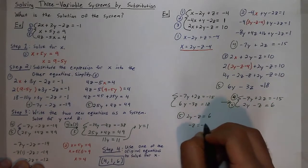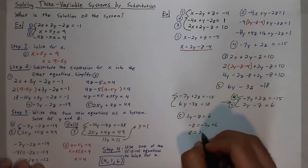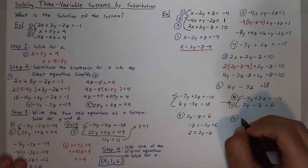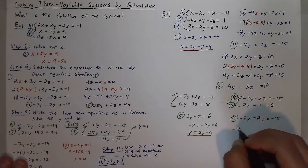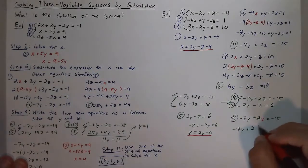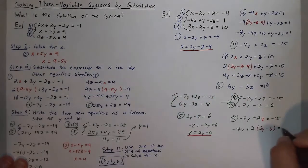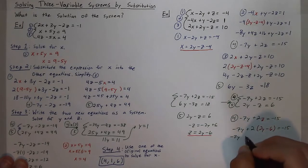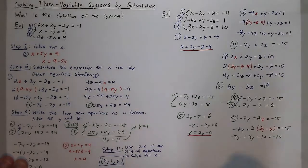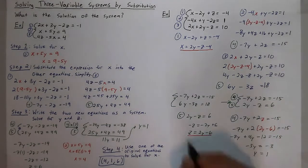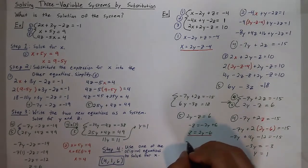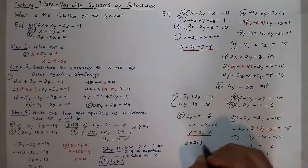I can use substitution to finish solving this by solving the fifth equation for z, giving me z is equal to 2y minus 6. I'll take equation 4, which is negative 7y plus 2z, and substitute in 2y minus 6. So negative 7y plus 2 times (2y minus 6) equals negative 15. Distributing the 2 gives negative 7y plus 4y minus 12 equals negative 15. Negative 7y plus 4y is negative 3y, so adding 12 gives y equals 1. Plugging 1 into z equals 2y minus 6 gives z equal to 2 times 1 minus 6, which means z is equal to negative 4.